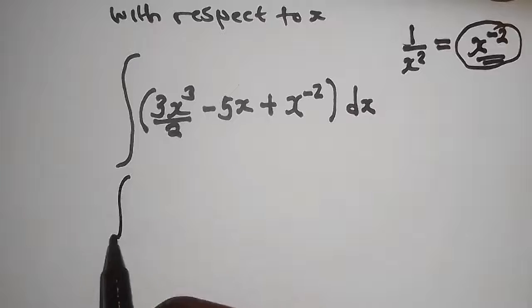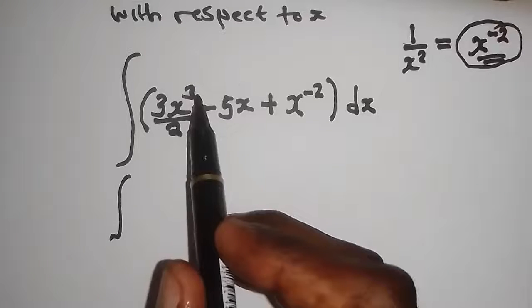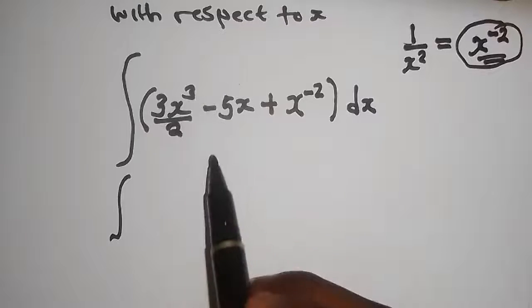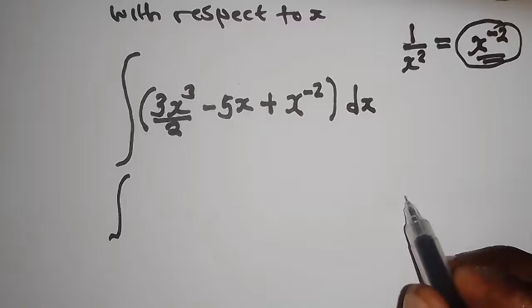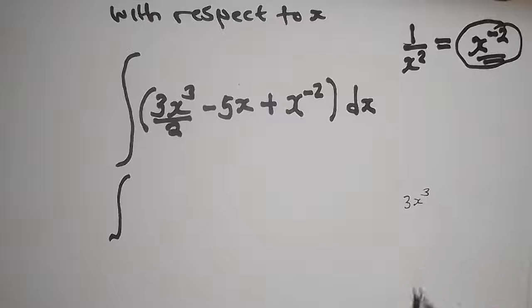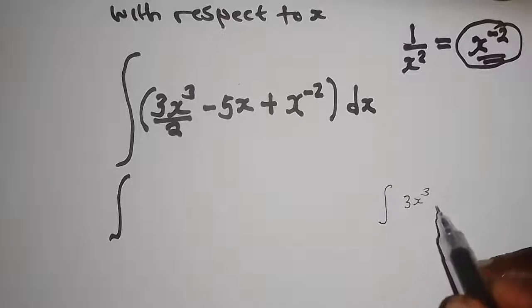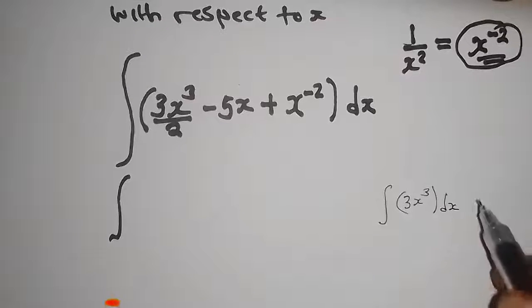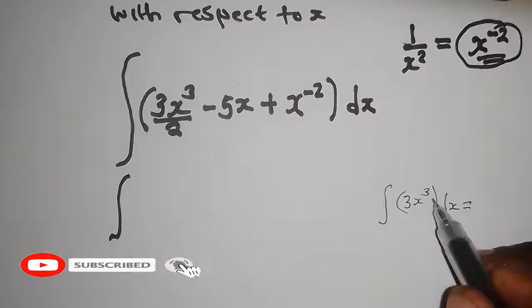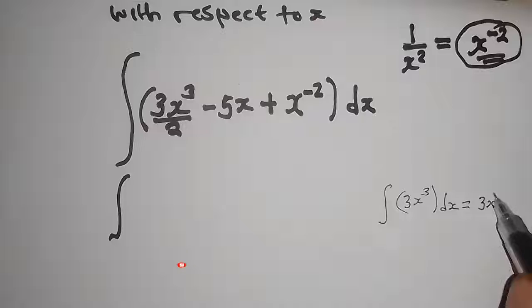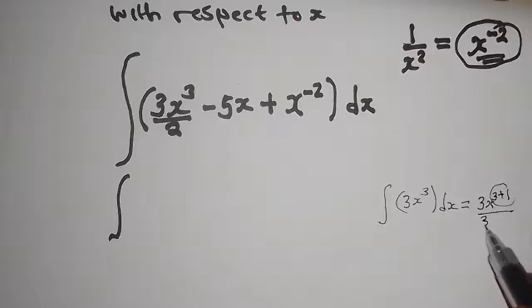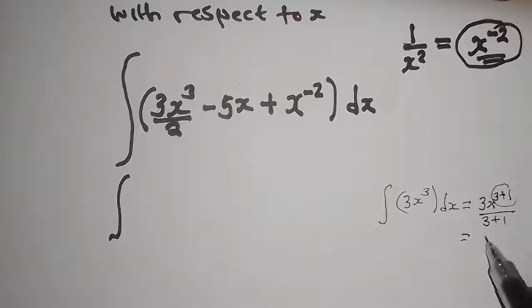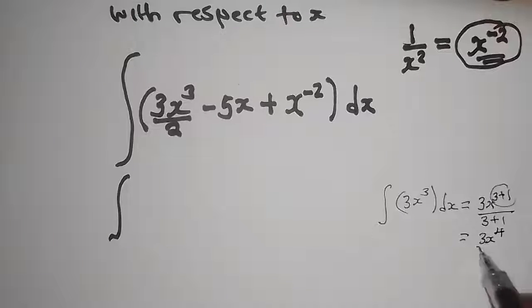Now we can integrate properly. The power of every term increases by one, and that new power also becomes the denominator. For example, integrating 3x³ with respect to x gives 3x to the power 3 plus 1, divided by 3 plus 1 — that is, 3x to the power 4 over 4.